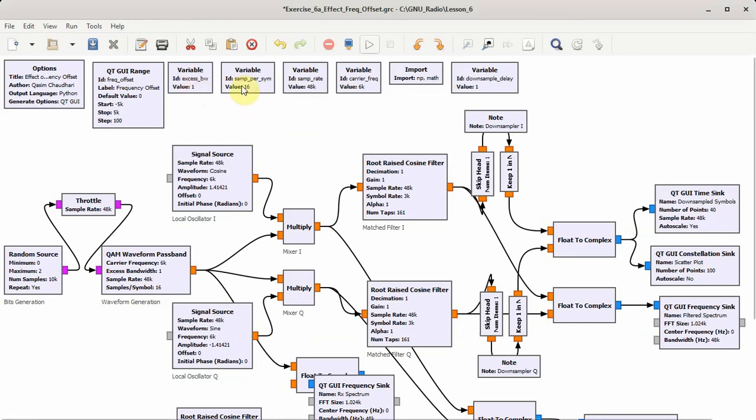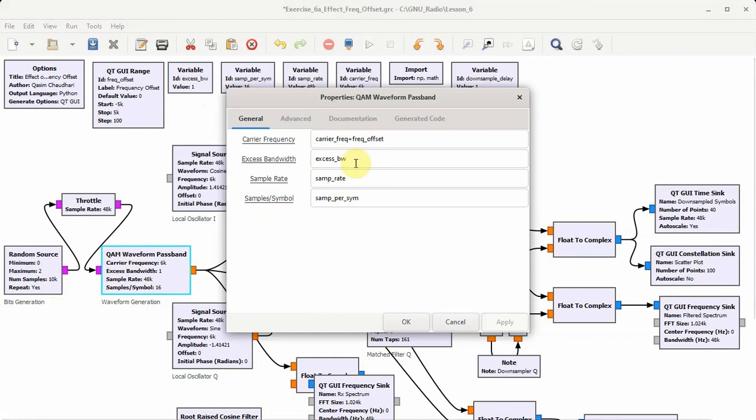The samples per symbol is given by 16 and the sample rate is 48,000. The carrier frequency chosen is 6000. It's not very high so that we can clearly see the spectrum shifting. This is the bit generation process and this is the custom QAM waveform block where we have chosen the excess bandwidth, sample rate and samples per symbol.